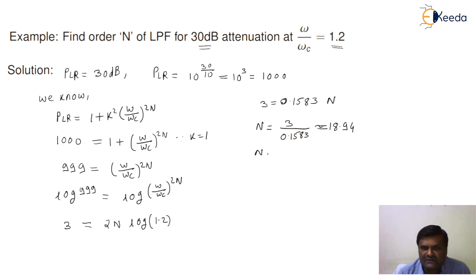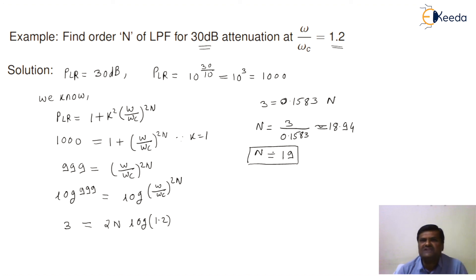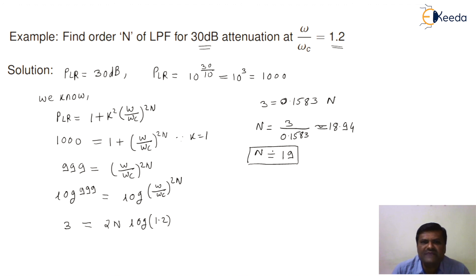Rounding to an integer, N = 19. This means that if you want 30 dB attenuation at ω/ωc = 1.2, the required filter order is 19. According to the selection of filter order and this kind of filter design, we will get maximum attenuation in the stop band. This is the response we get in the passband as well as in the attenuation band, also called the stop band.